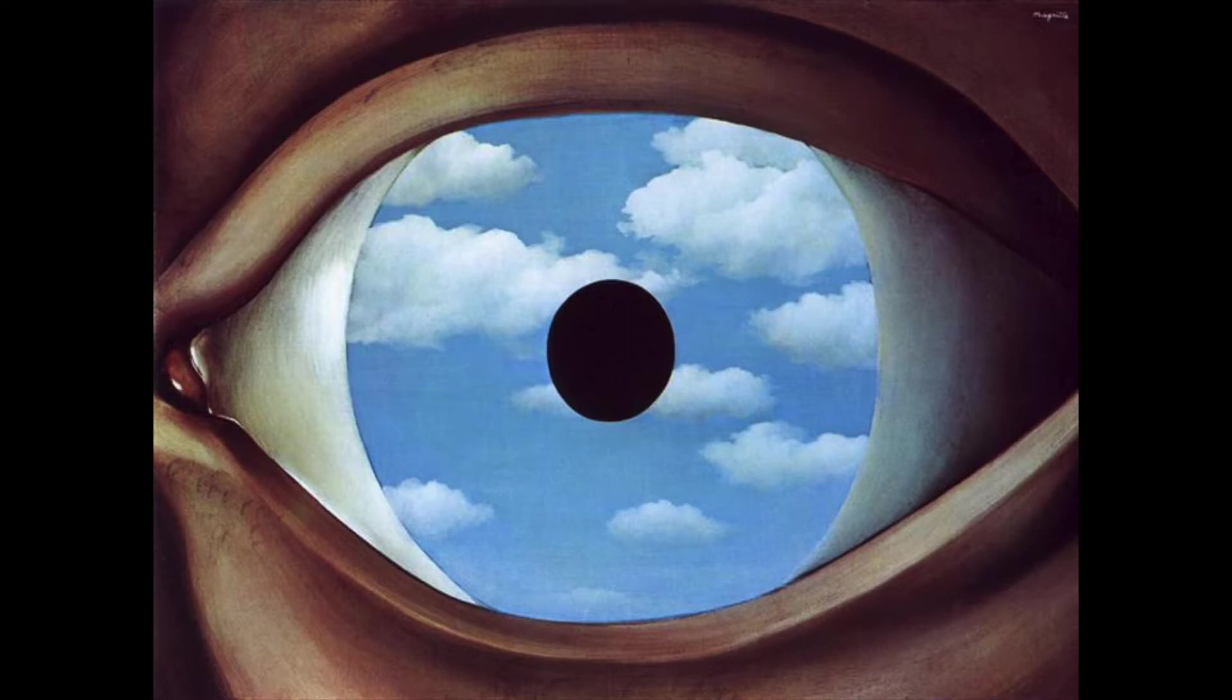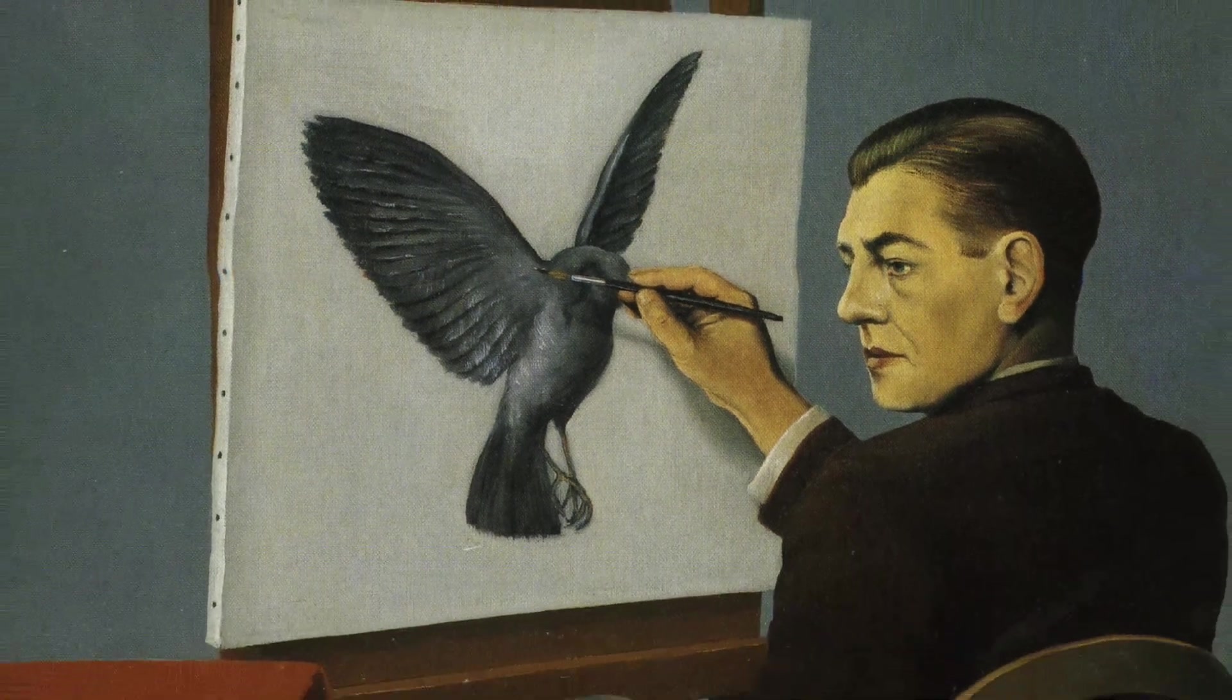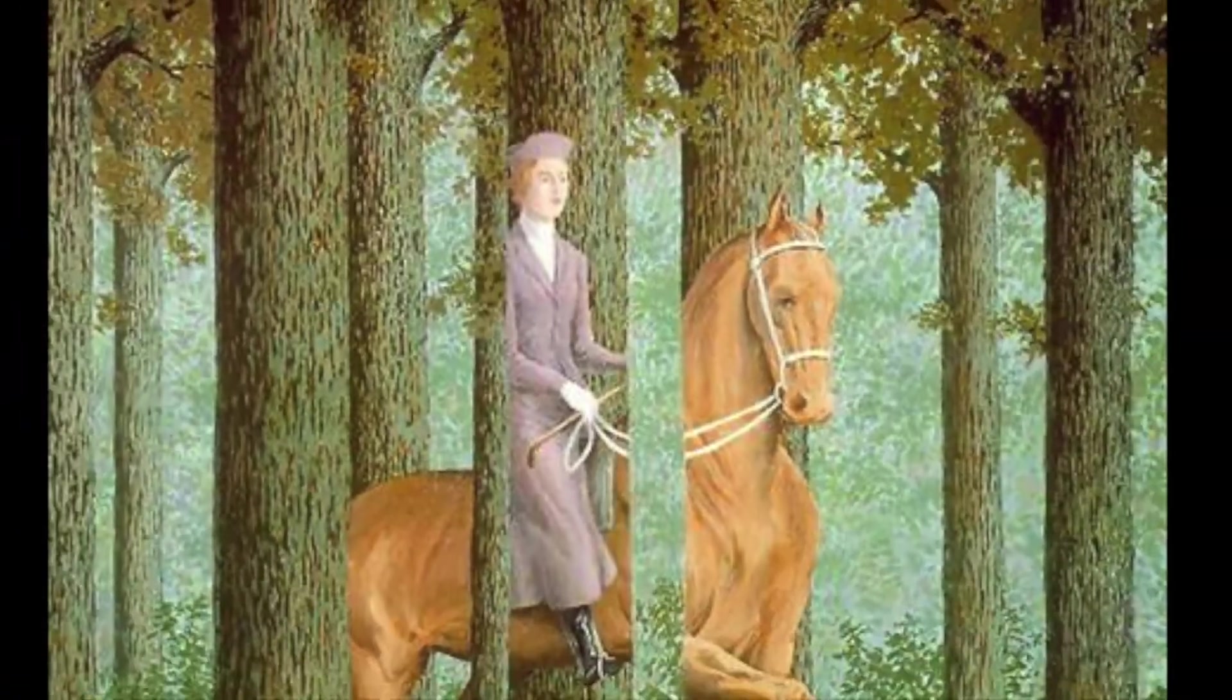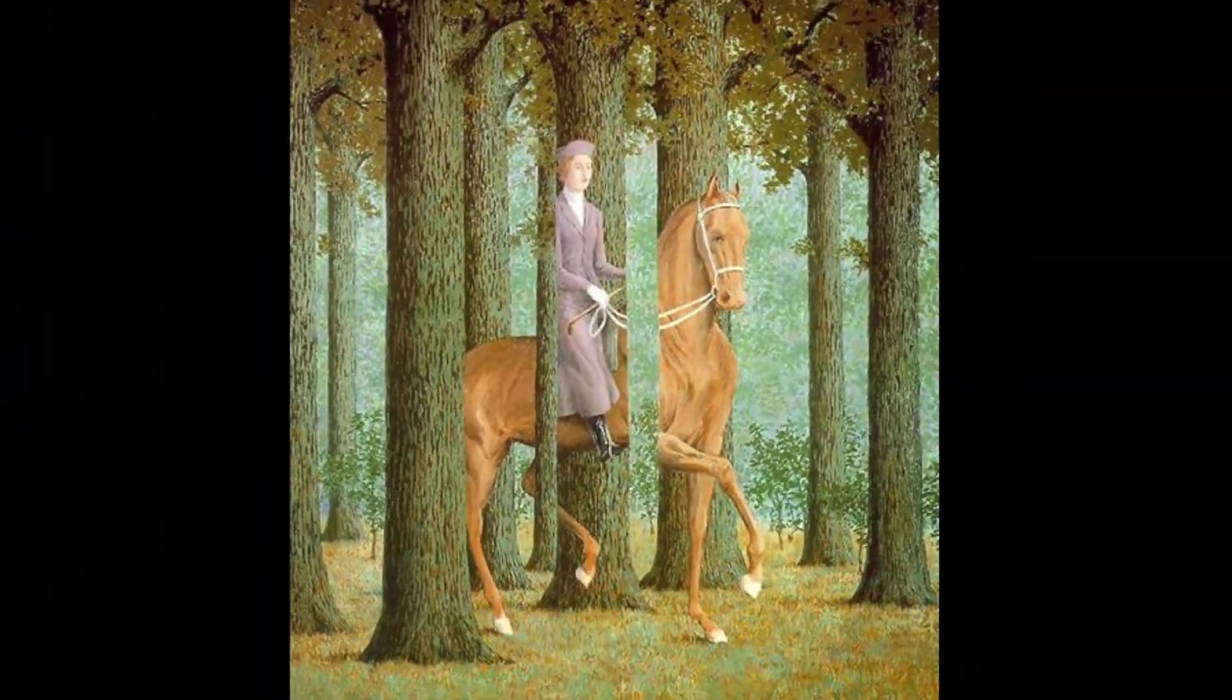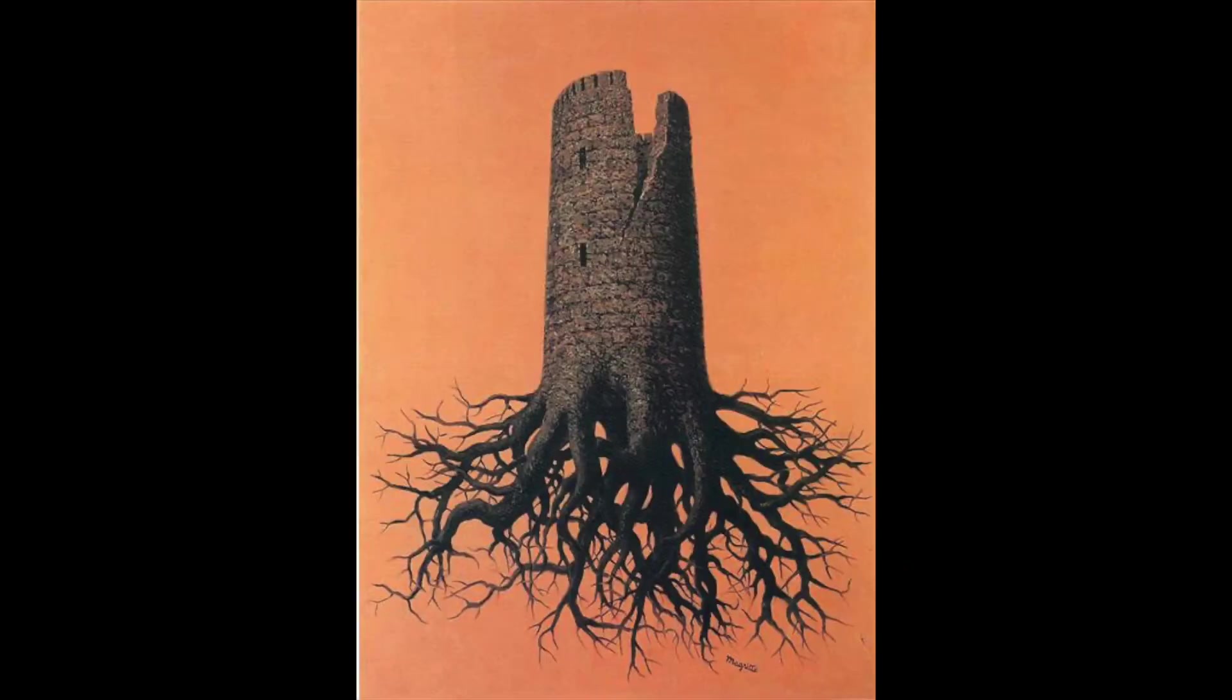This is joined to his desire to create poetic imagery. He described the act of painting as the art of putting colors side by side in such a way that their real aspect is effaced, so that familiar objects - the sky, people, trees, mountains,